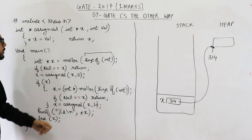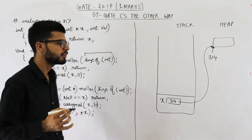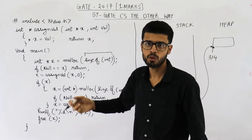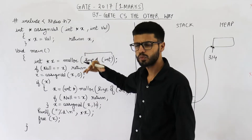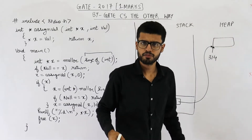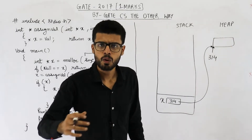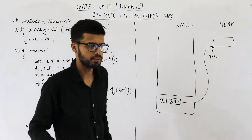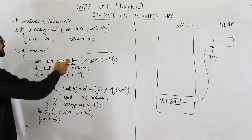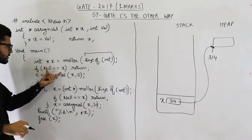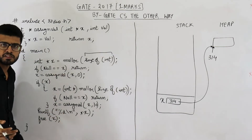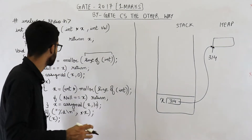The next line says: if null == x, then return. Sometimes malloc may fail to allocate memory — for example, if the heap is already full and the OS is not allowing the process to use more memory. In such a scenario, malloc simply returns null. If that happens, the return statement ends the main function, which means the program has ended.